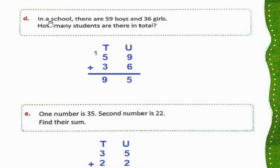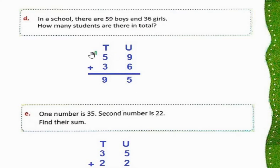Part D: In a school, there are 59 boys and 36 girls. How many students are there in total? 59 plus 36: 9 plus 6 is 15 — 5 here and 1 carry forward. 1 plus 5 is 6, 6 plus 3 is 9. So the total number of students in the school is 95.